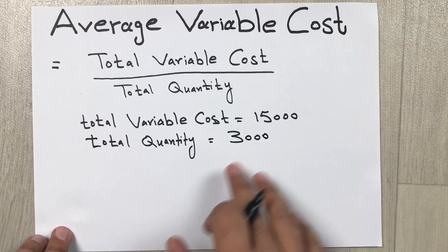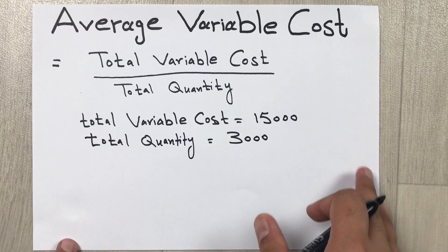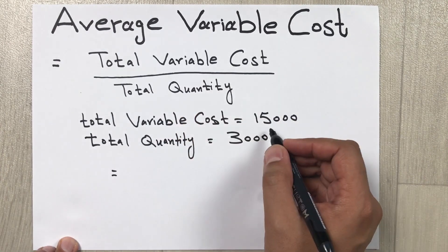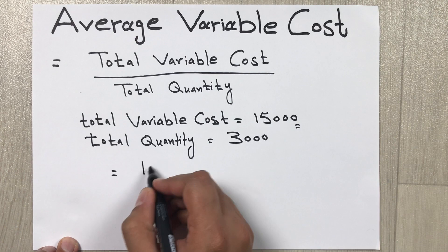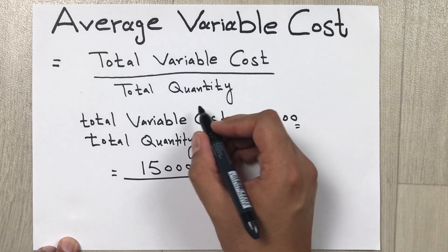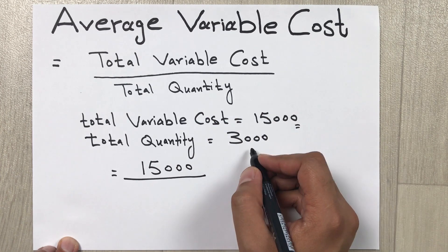Now we have the values, so we will put these values into the formula. Total variable cost is 15,000, so we put here 15,000 divided by total quantity, which is 3,000.